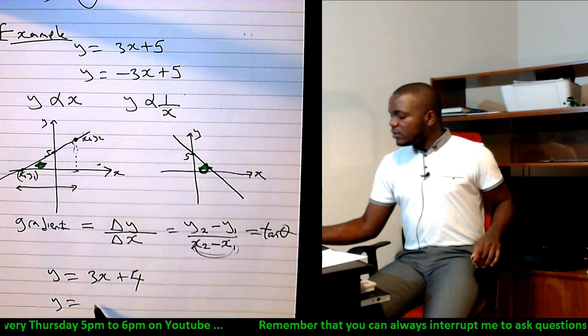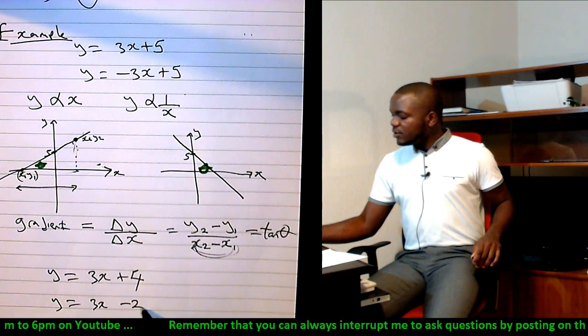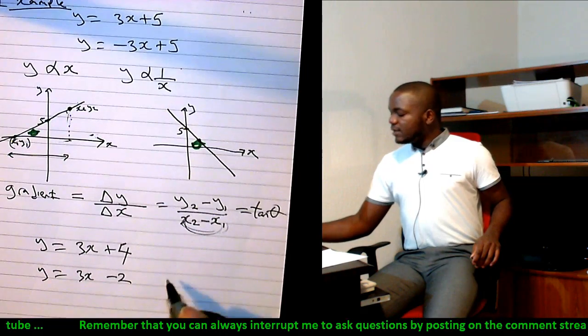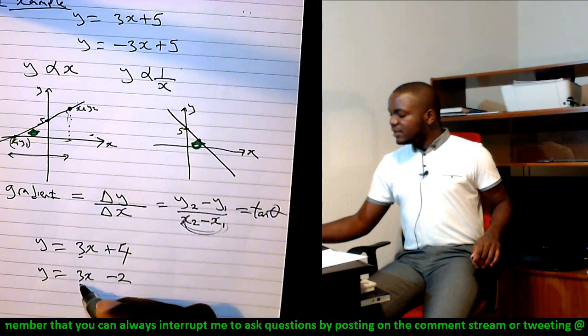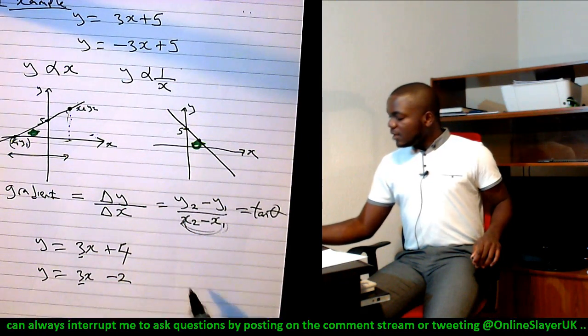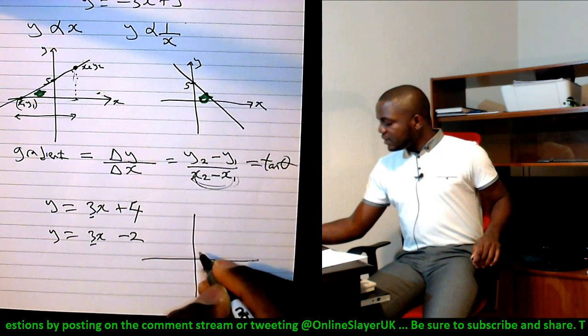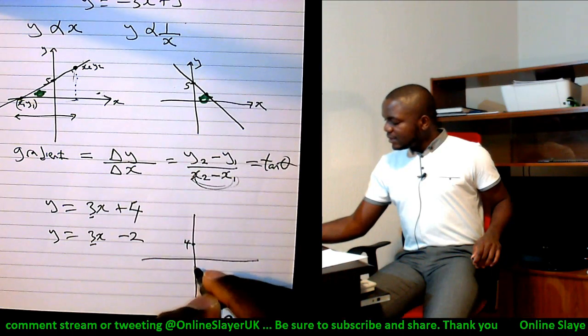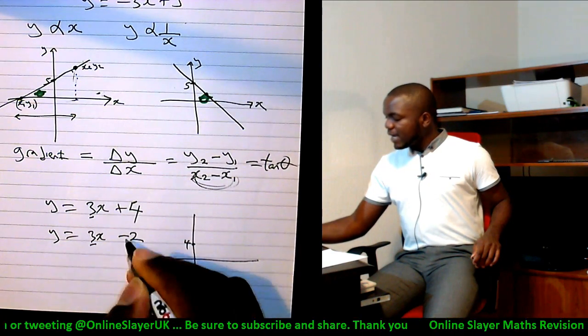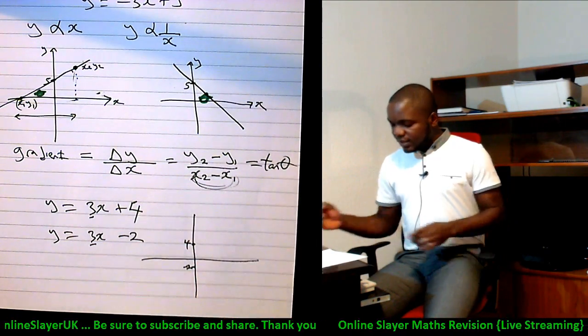If you look at these two graphs, they've got the same gradient, 3 and 3. What do you think will be the line for them? If this is the intercept for the first one, 4, and this is the intercept of the second one, minus 2, this first line is going to go with a gradient of 3, maybe this way.